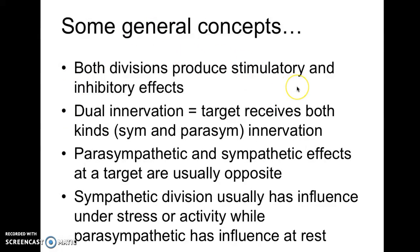Now some general concepts. Both divisions of the autonomic nervous system — both the sympathetic and the parasympathetic — can produce stimulatory and inhibitory effects. When we talk about dual innervation, we mean that the target organ receives both sympathetic and parasympathetic innervation. Most organs do receive innervation from both divisions. The sympathetic and parasympathetic effects usually oppose one another, which gives us finer control over the actions of these organ systems.